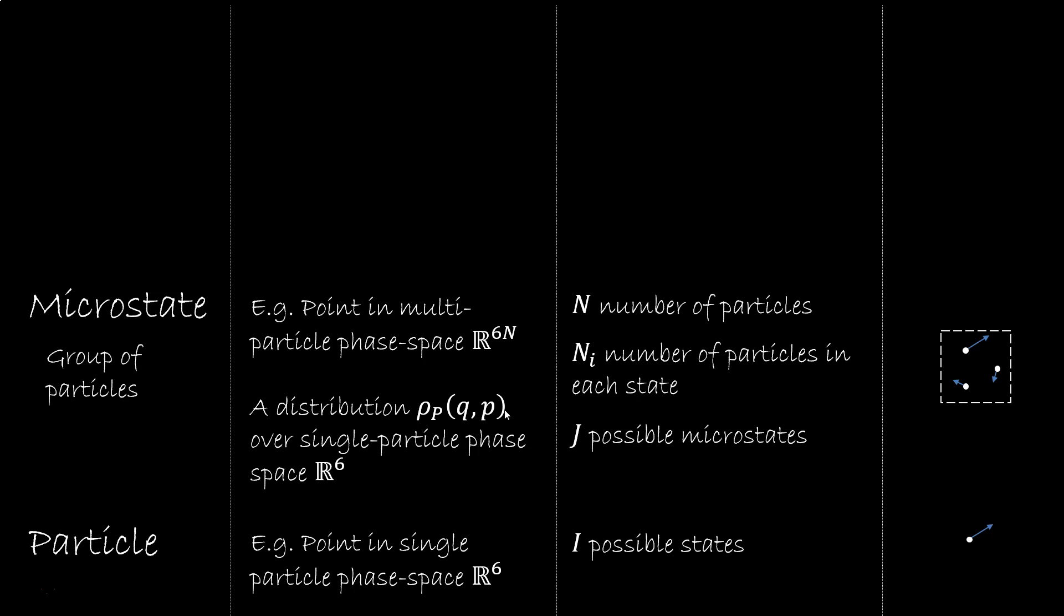Alternately, we can represent a microstate as a statistical distribution rho p over a single particle phase space. This is not a probability distribution, it's a statistical distribution. We actually have N particles at the same time.